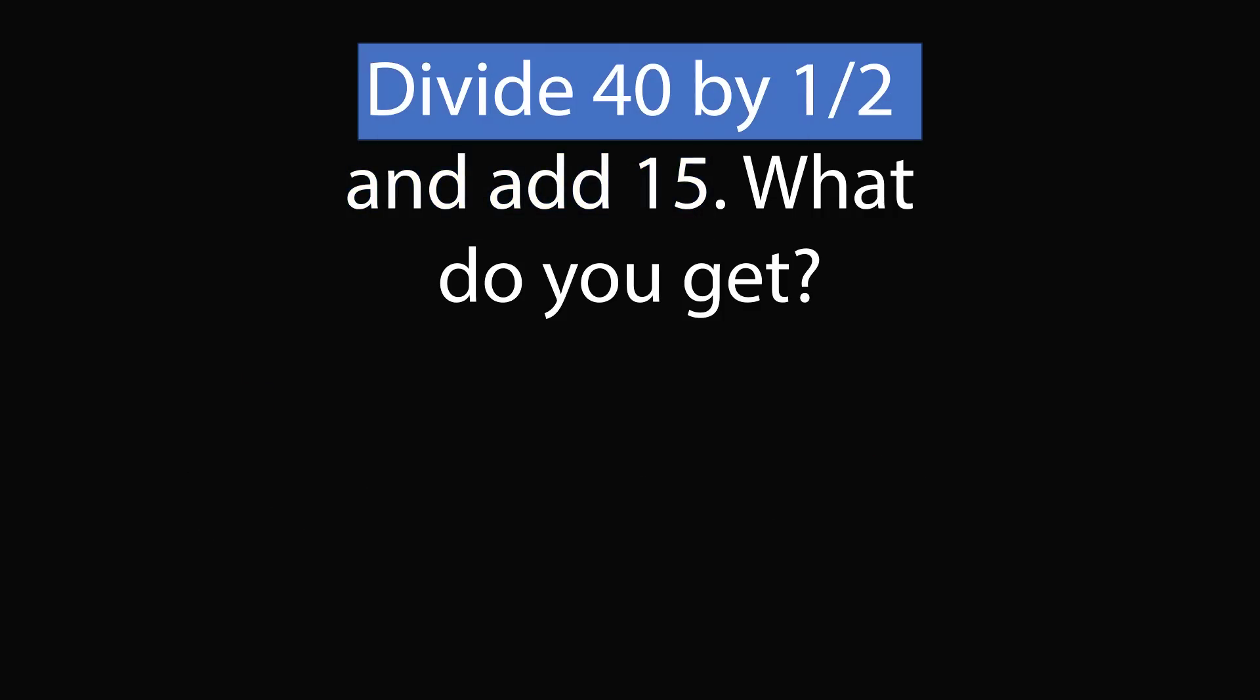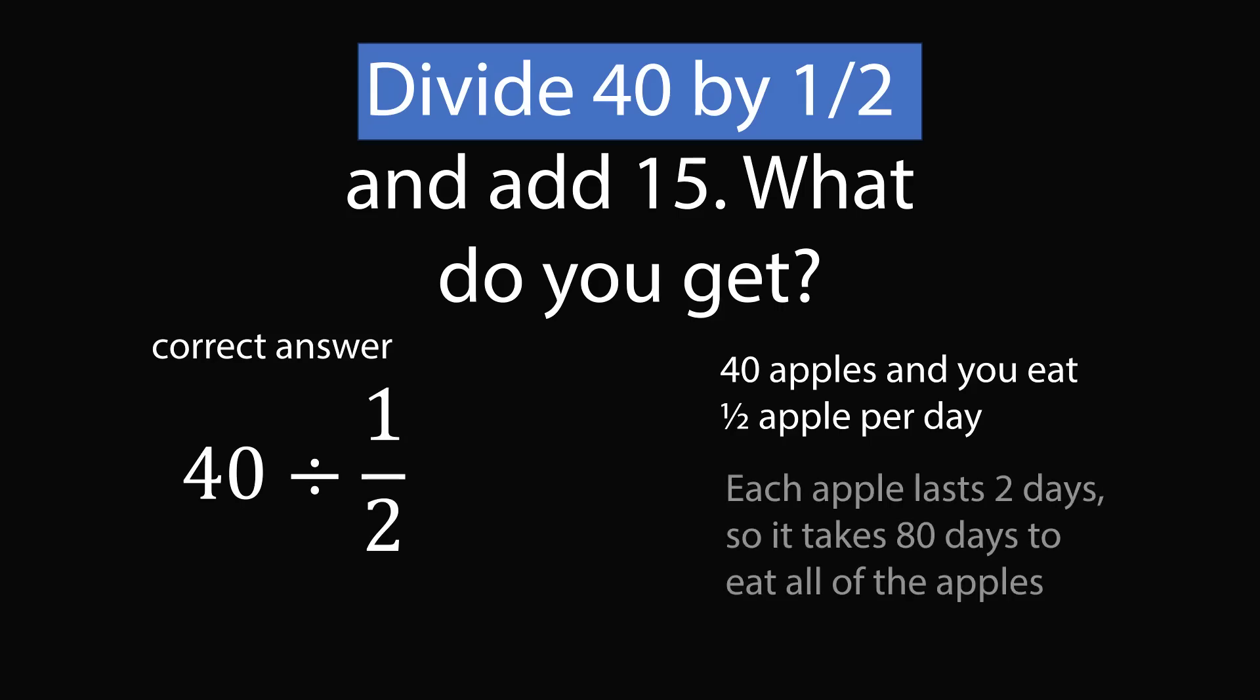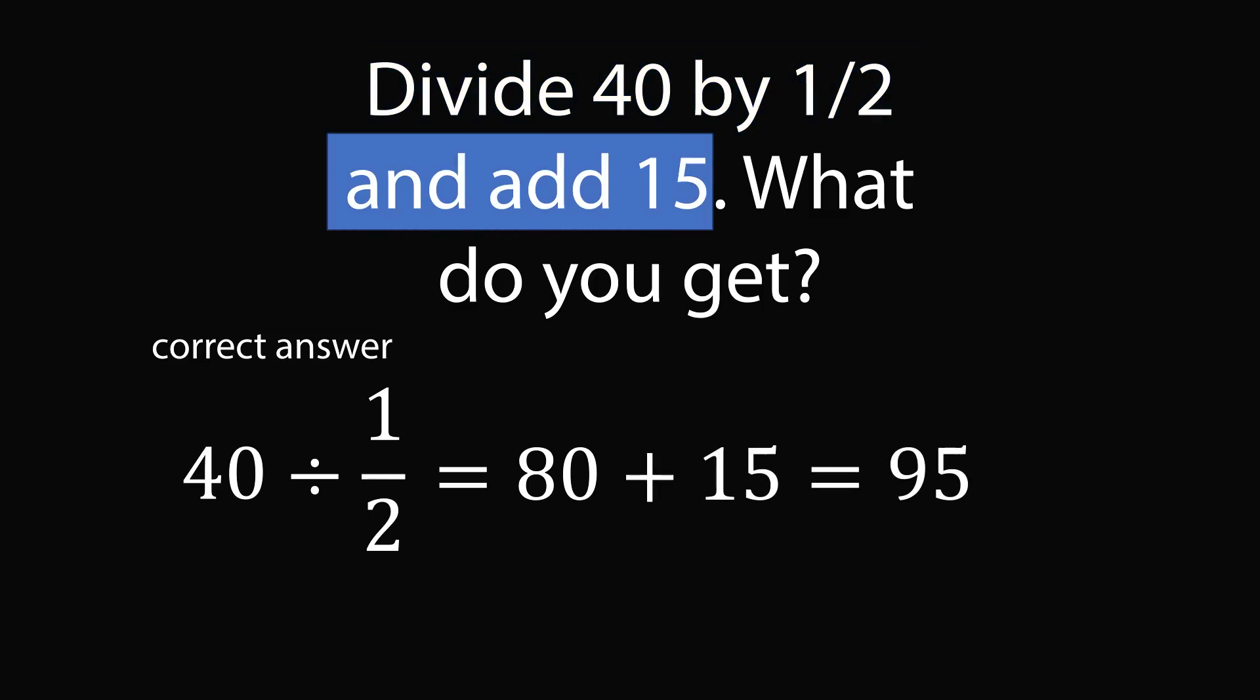So I would say when you divide 40 by 1 half, the correct answer would be to take 40 divided by 1 over 2. So how do you solve this? Imagine you have 40 apples, and you eat 1 half of an apple every single day. How many days will it take you to eat all of the apples? It would obviously take 2 days per apple, so it would take 80 days to eat all of the apples. How about them apples? So 40 divided by 1 half will be equal to 80. Then you add 15, and that gives you the answer of 95. And I would say this is without a doubt the correct answer.